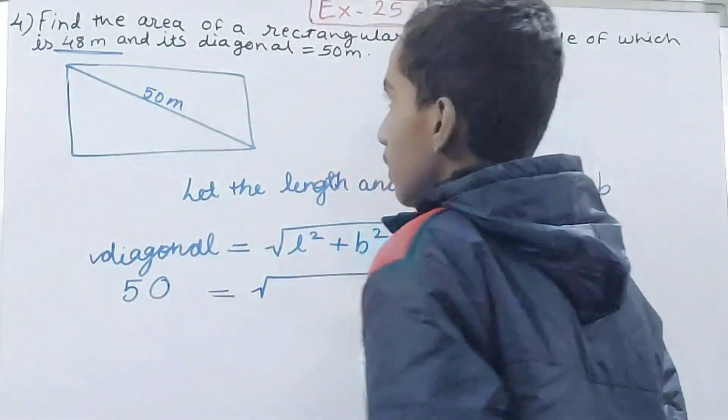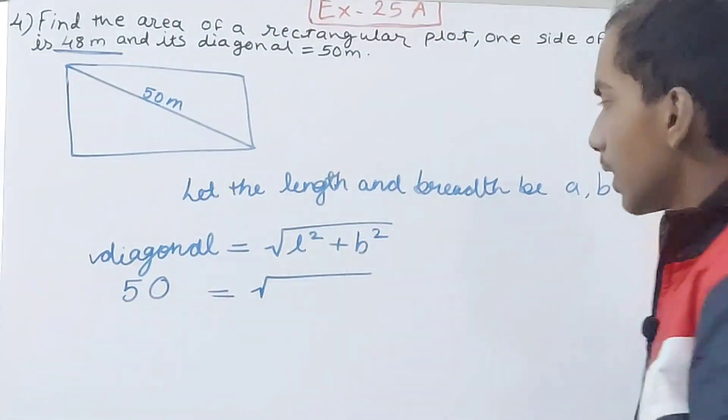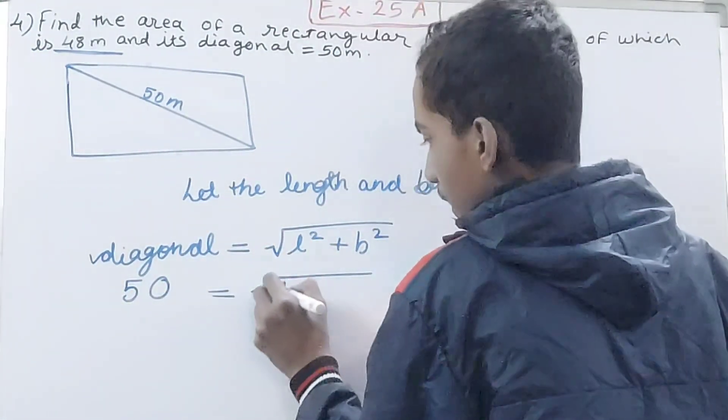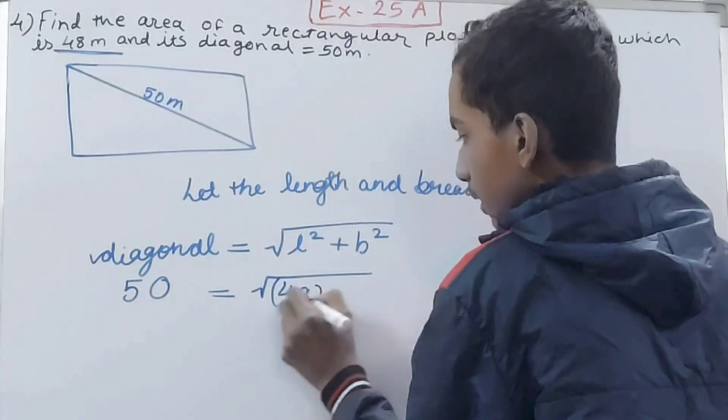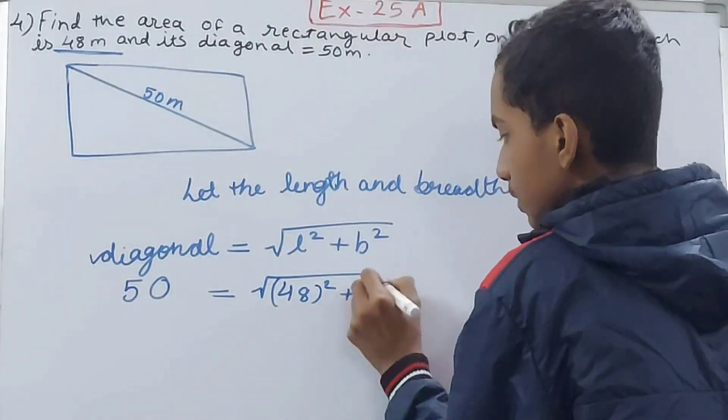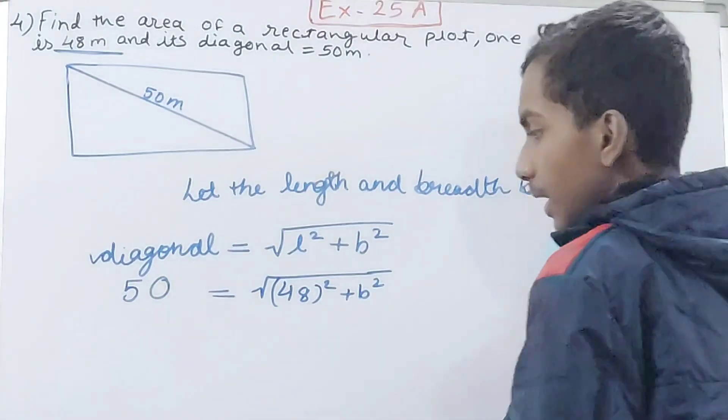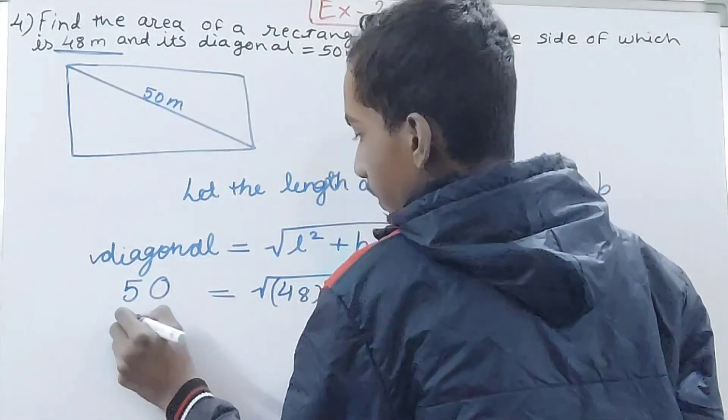So you can take any side as you wish. I will say 48² plus b². It's not really necessary, it can be any side.